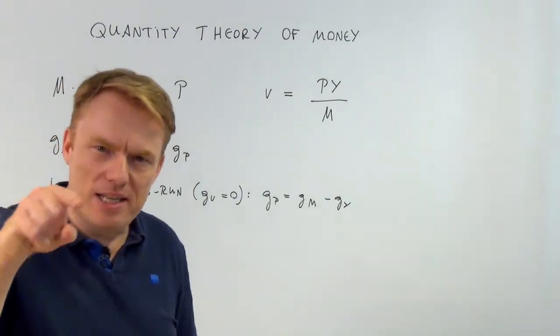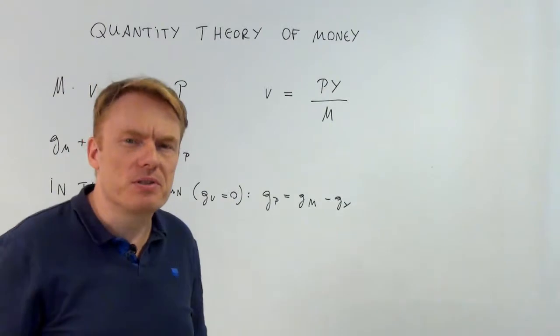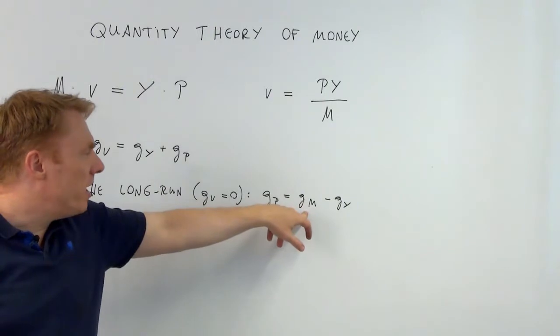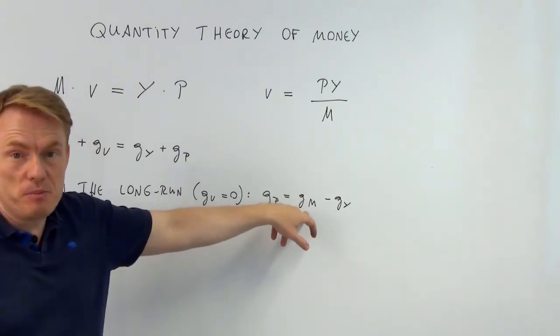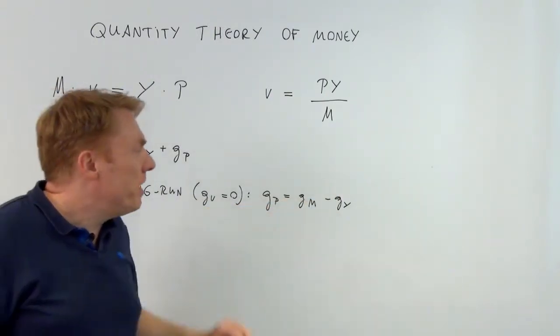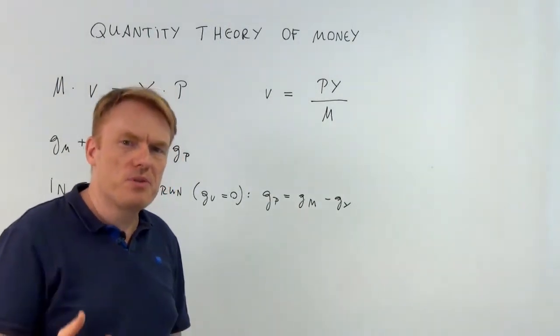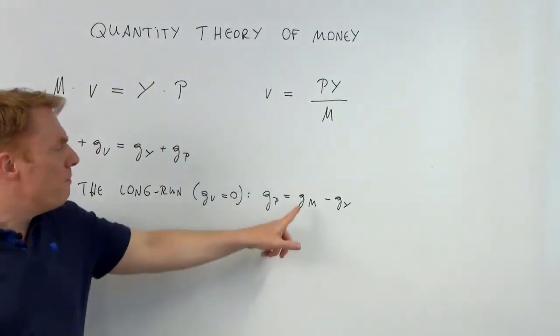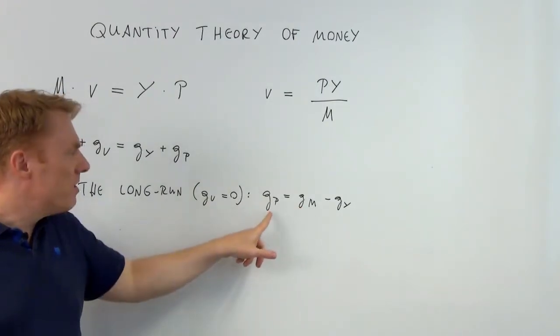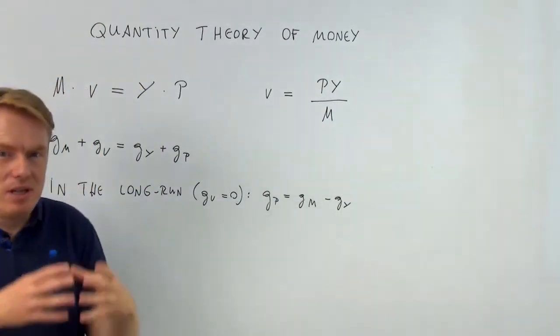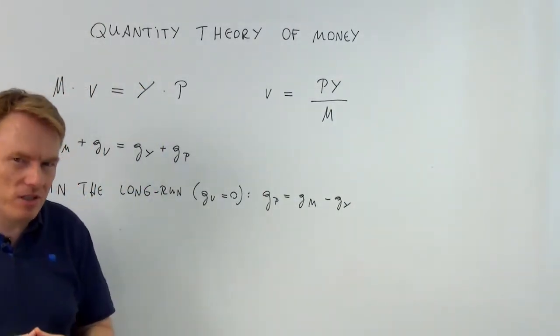Which is very important, because if you know that for the last year you had a growth rate of money of say 3% and a growth rate of real GDP of 2%, the difference is 3% minus 2%, which means 1%. So there would be a 1% growth rate in price level, a 1% inflation rate.